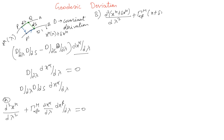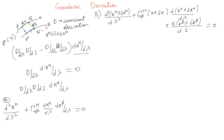For geodesic B: d²(x^μ + δx^μ)/dλ² + Γ^μ_αβ evaluated at the perturbed position, times (dx^α + δx^α)/dλ times (dx^β + δx^β)/dλ = 0. This is essentially asking how the tangent vector changes along ds.